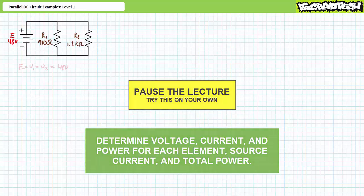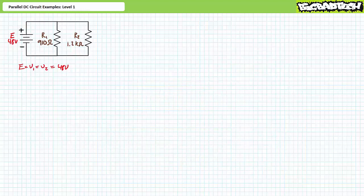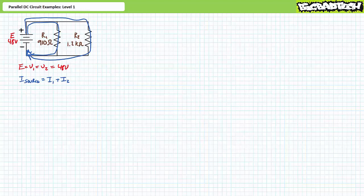If you're tracking, you should have obtained the following results. Before we begin the analysis, it's worth reviewing fundamental parallel DC circuit properties. First, voltage across elements in parallel is the same — for this circuit, E equals V1 equals V2 equals 48 volts. Kirchhoff's current law states that for any node, the summation of incoming currents equals the summation of outgoing currents, so source current equals I1 plus I2. We should expect the smallest resistor, R1, to draw the largest current and dissipate the most power, and conversely R2 the least. Finally, power total equals P1 plus P2.